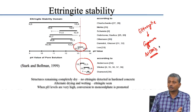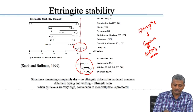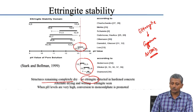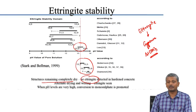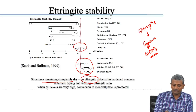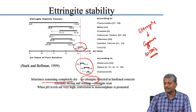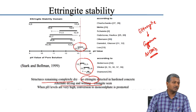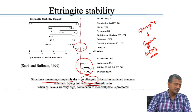From field evidence, structures that remain completely dry show absolutely no ettringite detected in hardened concrete. If there is no moisture, you do not see formation of ettringite at later stages. When you have alternate drying and wetting, some ettringite is seen, but because of the drying you will probably not have a condition where ettringite formation causes expansion.